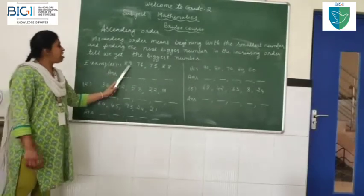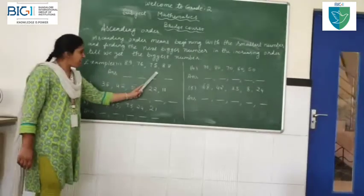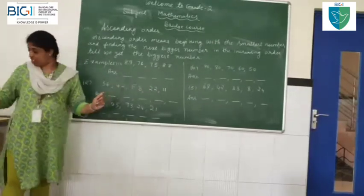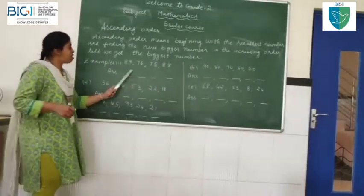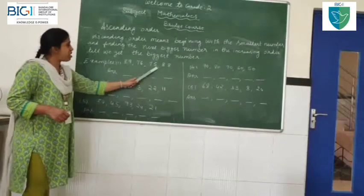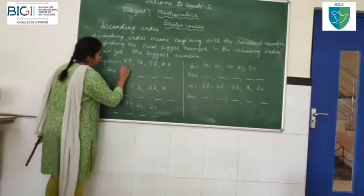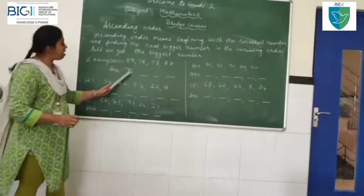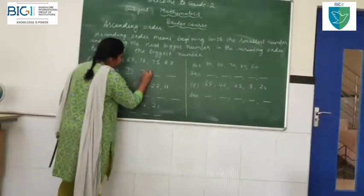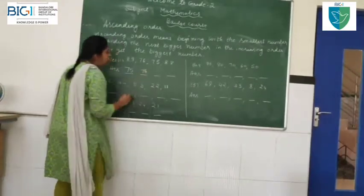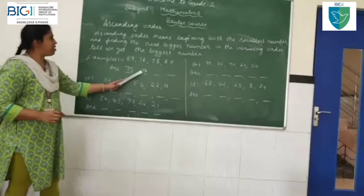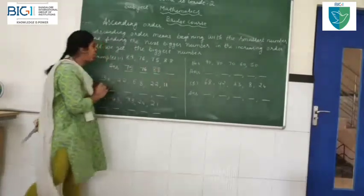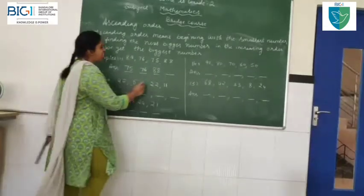89, 76, 75, 88. In this, what is the first smallest number? The smallest number in this is 75. Next bigger number after 75 is 76. Next bigger number after 76 is 88. The next bigger number after 88 is 89.